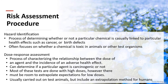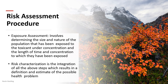The procedure follows these steps. Identification: can we determine whether a particular chemical is causally linked to a health effect such as cancer or birth defects? Dose response assessment: characterizing the relationship between the dose of an agent and the incidence of an adverse health effect. Exposure assessment: determining the size and nature of the population exposed to the toxicant. Risk characterization: integrating all steps to result in a definition and estimate of the possible health problem — what is the extent of the health problem?